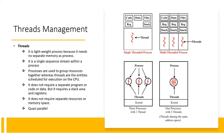Here we can see three processes, each with one thread — that is three processes each with one thread. And here there is one process with three threads activated, so we can see one process with three threads.